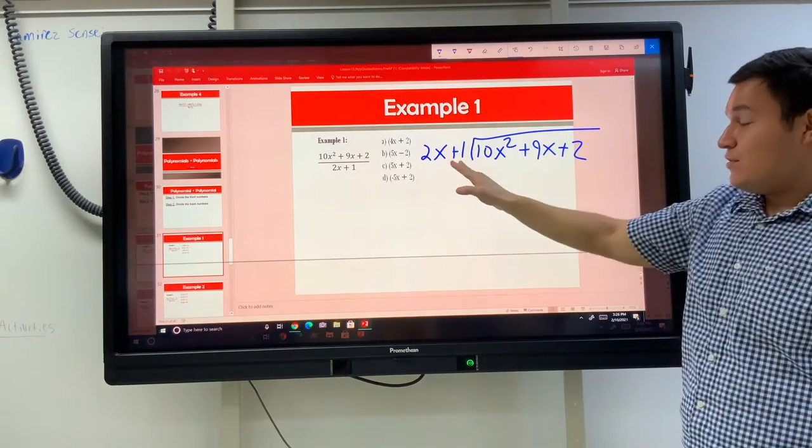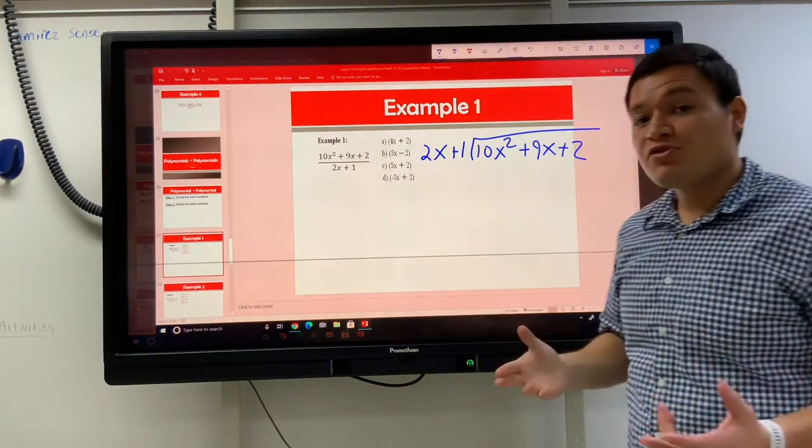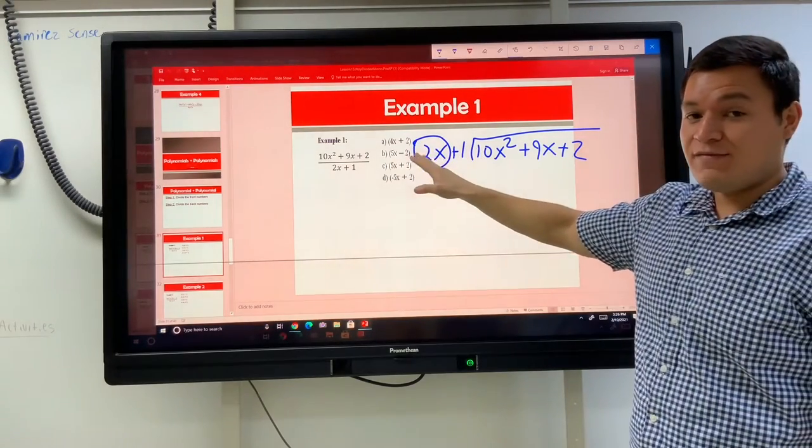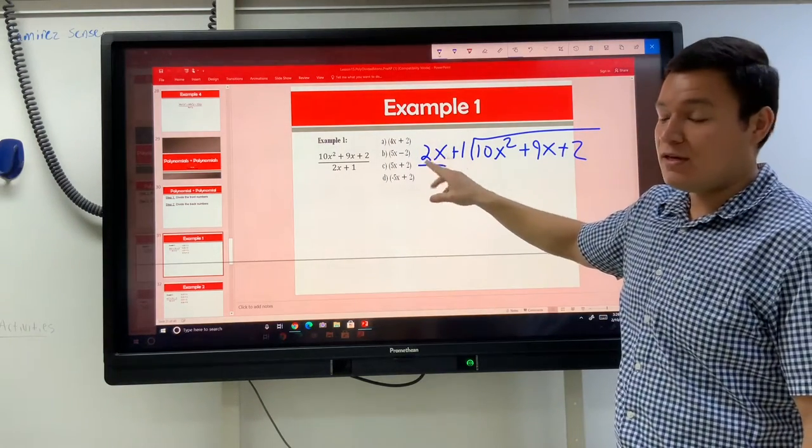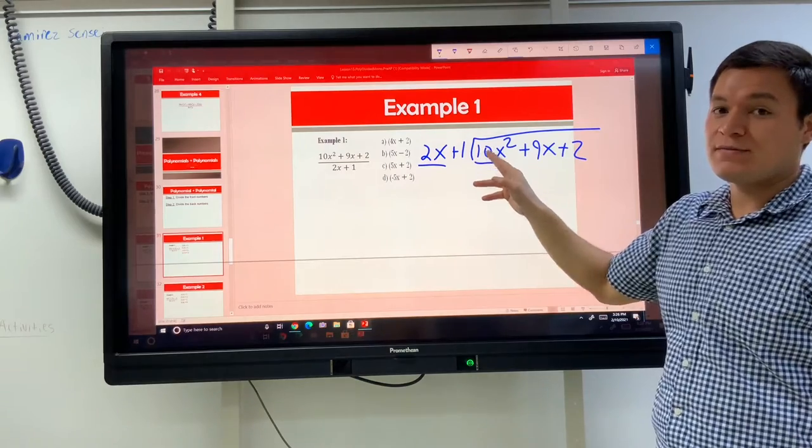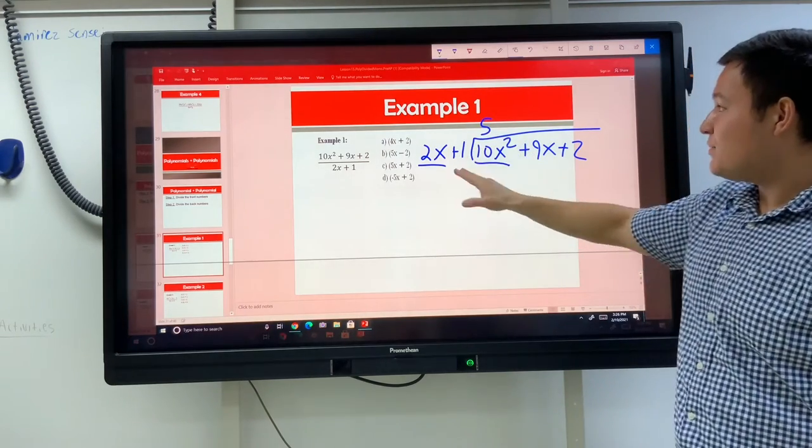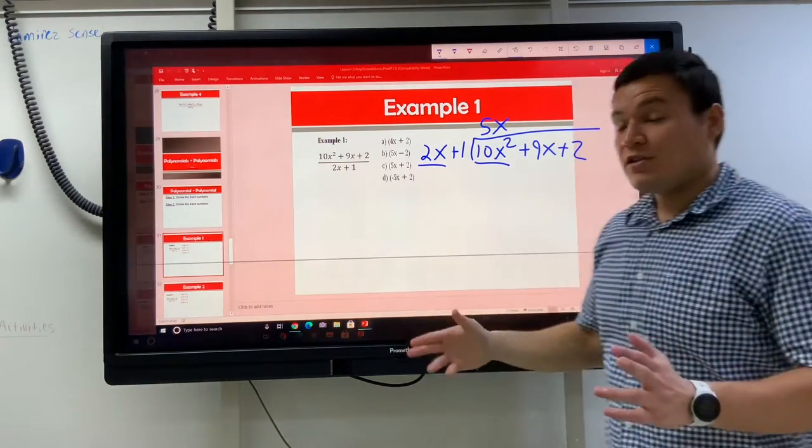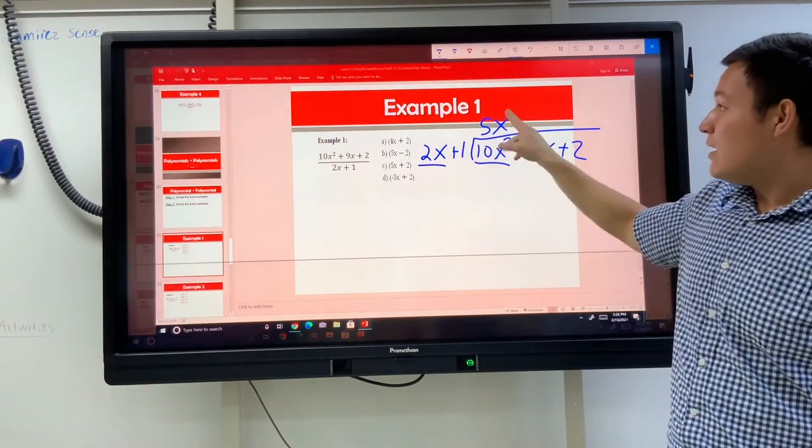Then, doing this division looks really weird. How am I supposed to fit 2x plus 1 into 10x squared? And, really, you don't. All that you're trying to do is you're trying to find, how can I make this first part, the only part that has the variable, or the part that has the highest variable? How do you make this part that has the highest variable on the outside become this thing? How can a 2x become a 10x squared? You have to multiply it by something. 2 times something makes 10, and that number is 5. x times something makes x squared. That would be x. When we're doing division, the goal is, how can this thing on the outside become that first piece on the inside? And, the answer is by doing a 5x.